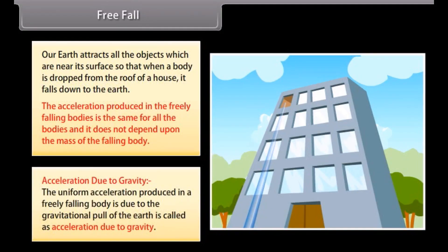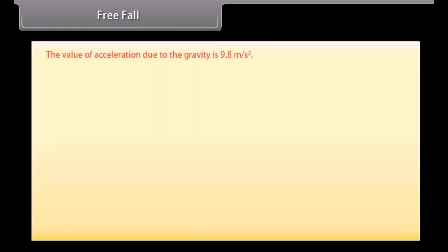Acceleration due to gravity. The uniform acceleration produced in a freely falling body due to the gravitational pull of the earth is called acceleration due to gravity. The value of acceleration due to gravity is 9.8 m/s².